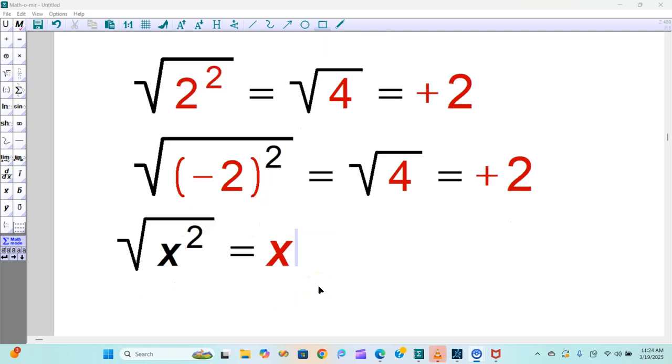So that means to make this work out the right way, when you take this out, around the x, put absolute value bars like this. So the square root of x squared is absolute value of x.